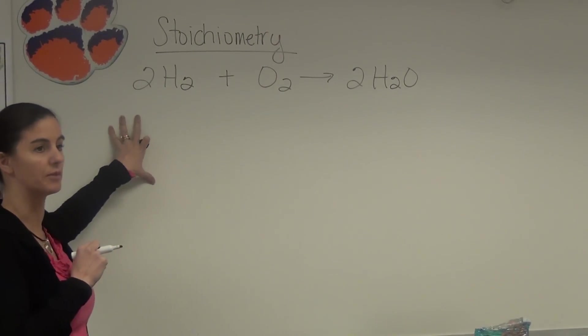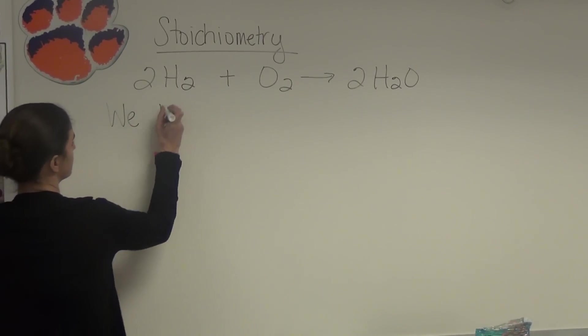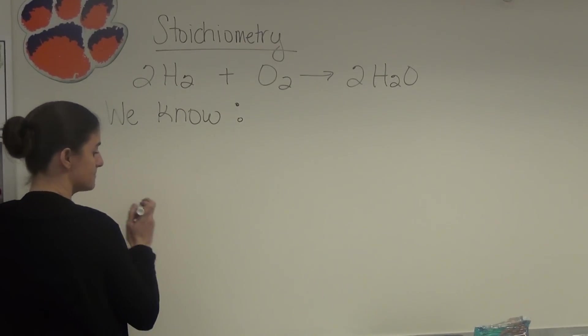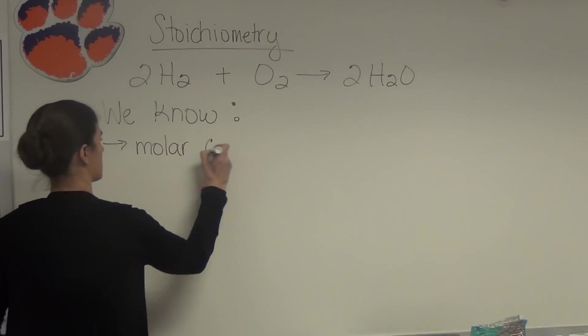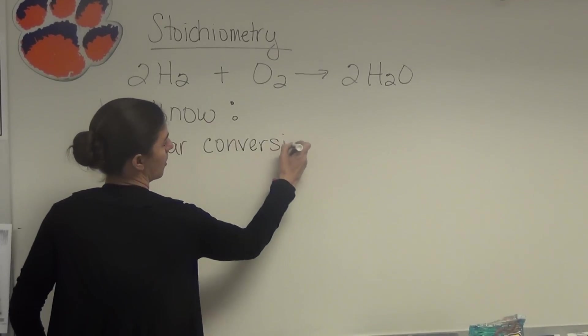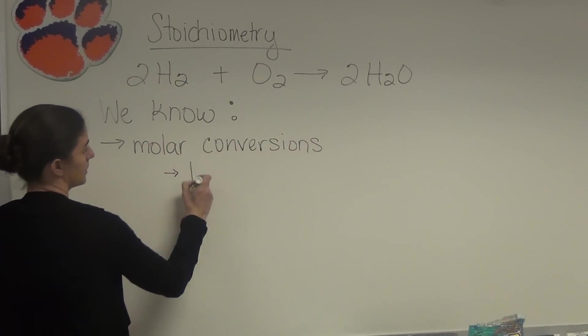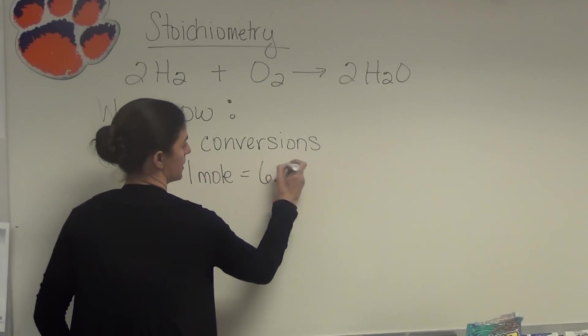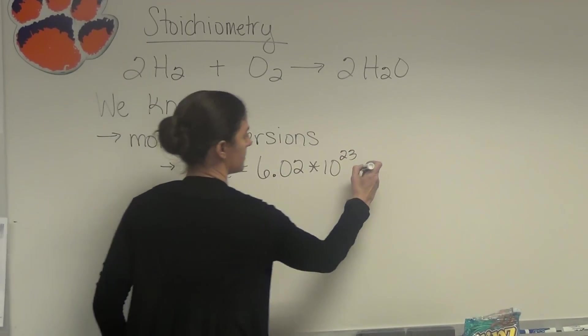So let's go back to what we already know. We know molar conversions and you have to remember all of your conversions. First one, one mole equals 6.02 times 10 to the 23rd particles.